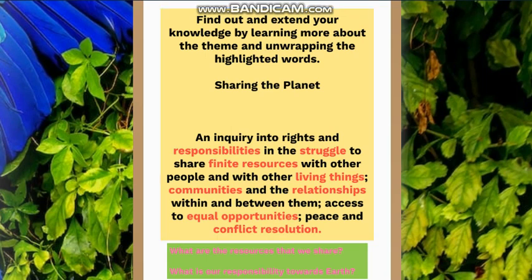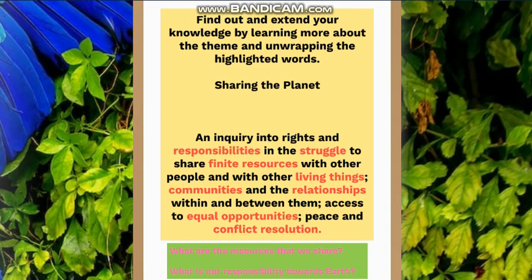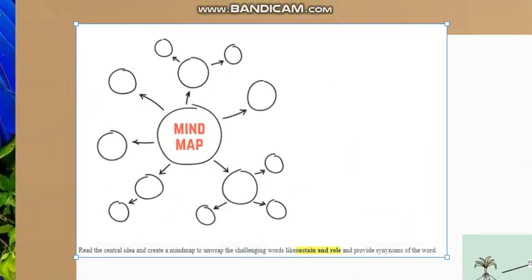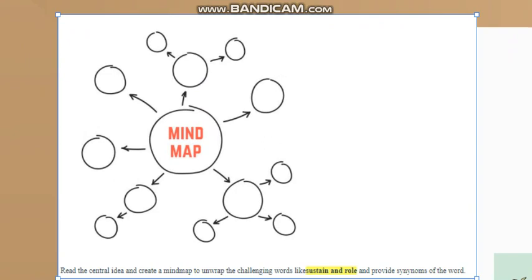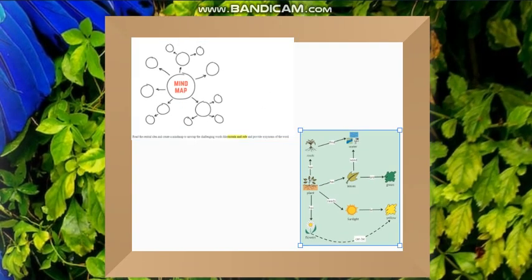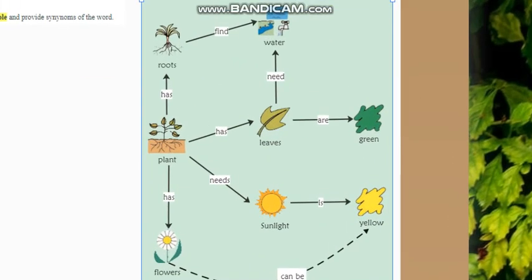These are the highlighted words that we are going to learn about in this theme. Examples of questions we need to ask ourselves before we start this unit are: What are the resources that we share? What is our responsibility towards Earth? At the beginning of our unit, you are going to draw a mind map about plants. We are going to read the central idea and create a mind map to unwrap challenging words like 'sustain' and 'role' and provide synonyms for the words.